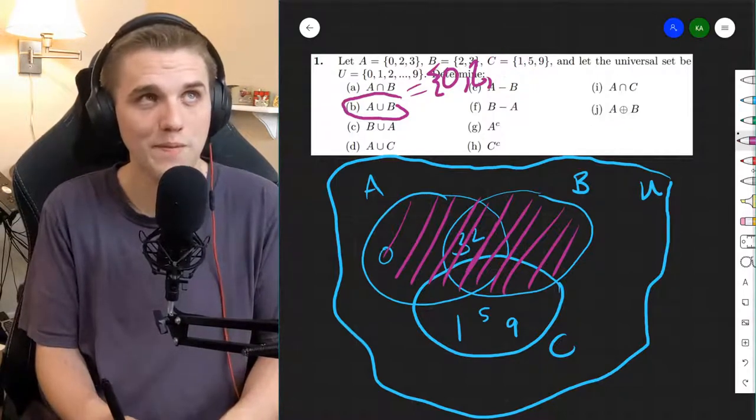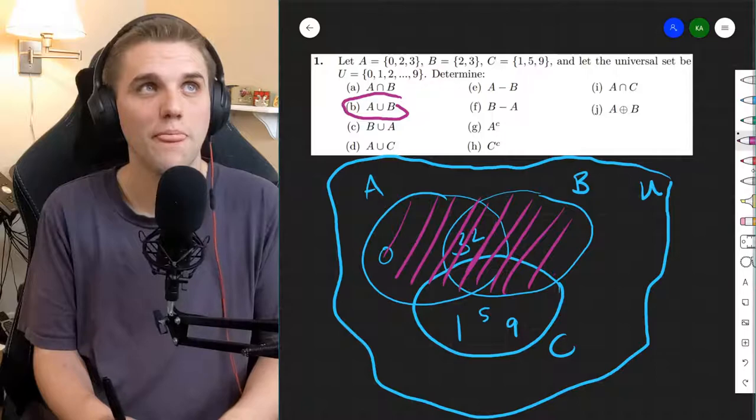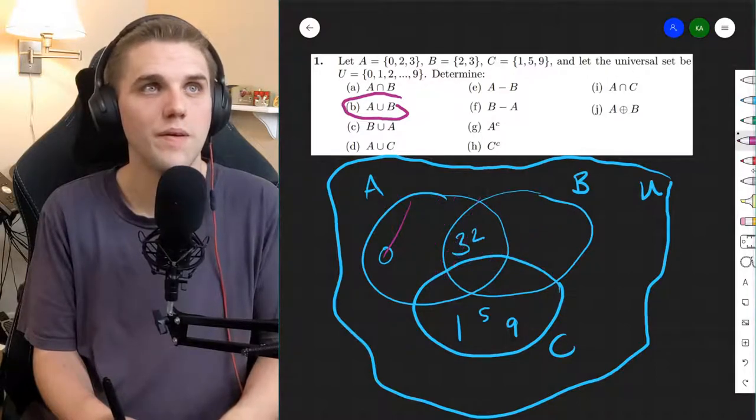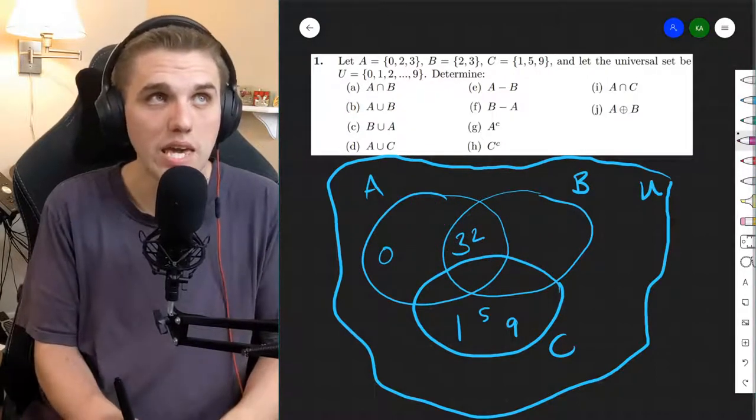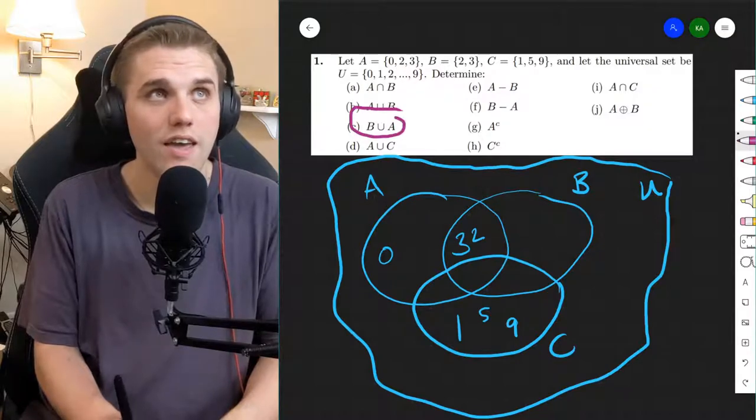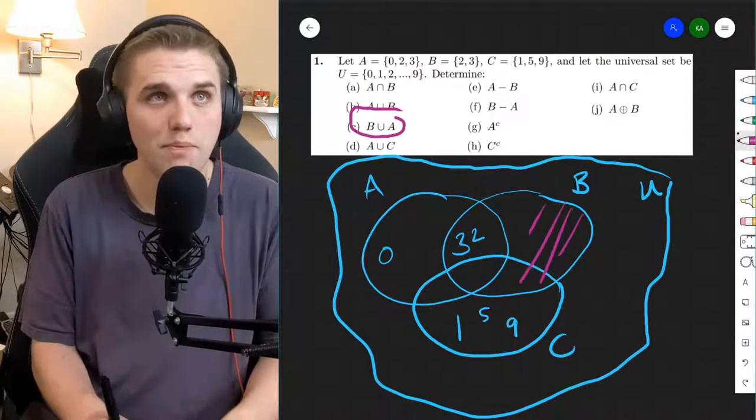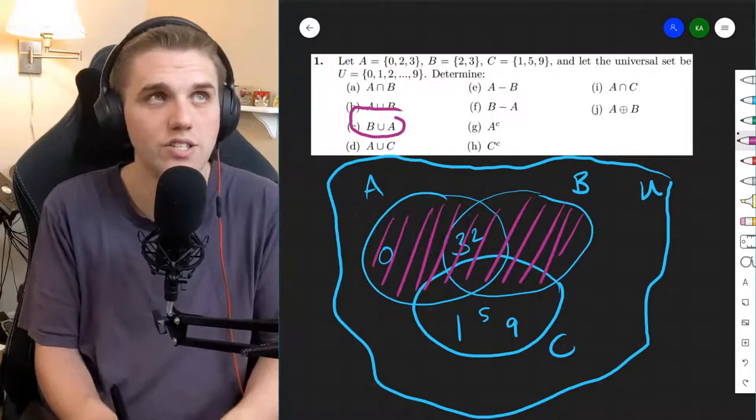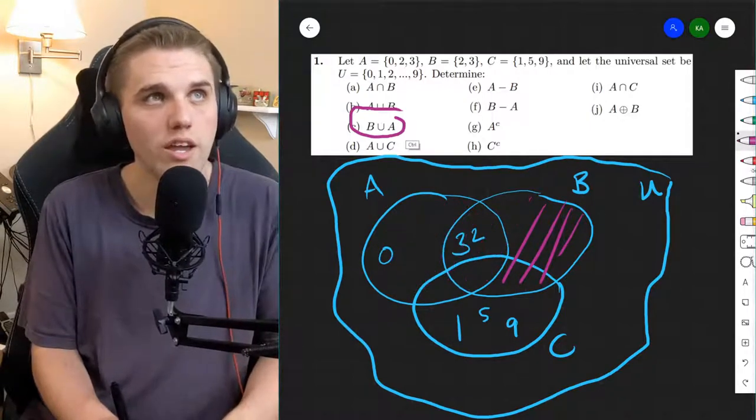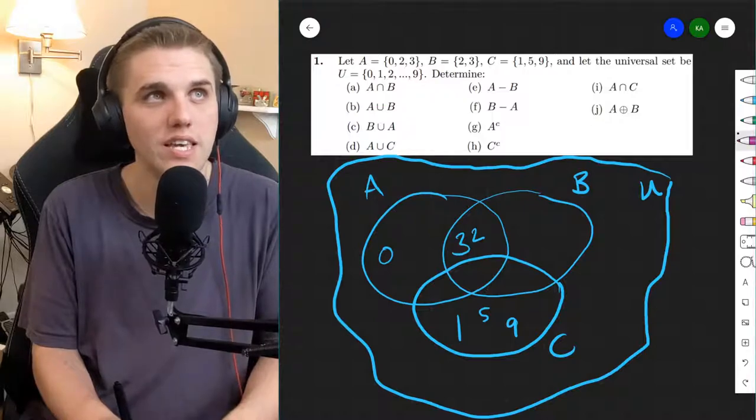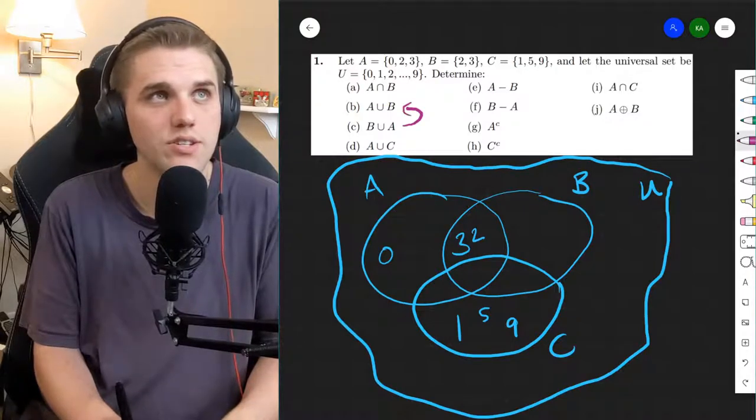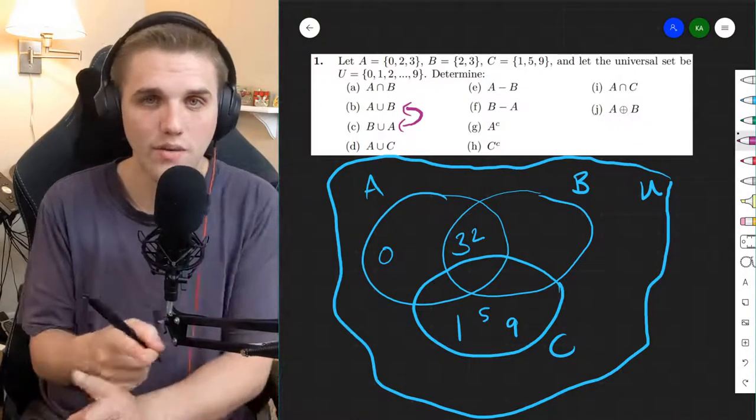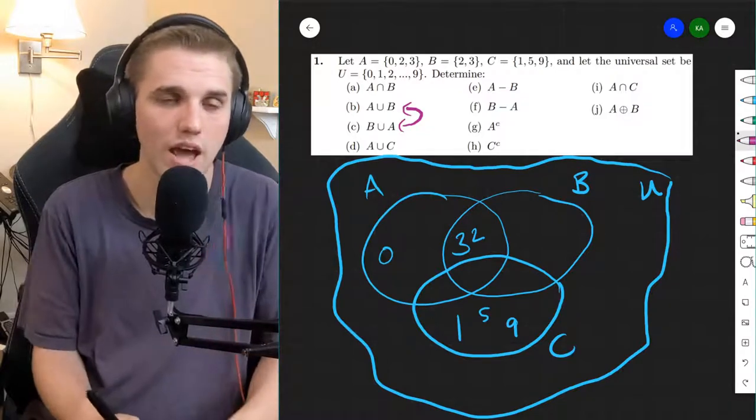Let's keep going. What about B union A? Now B union A is where we take B and we add A, but it's the exact same set. And so the whole point here is that B and C have the same answers, meaning that you can write the order of this union however you wish.